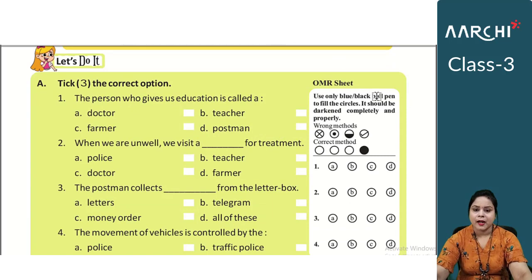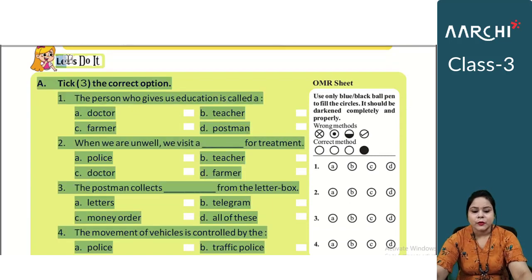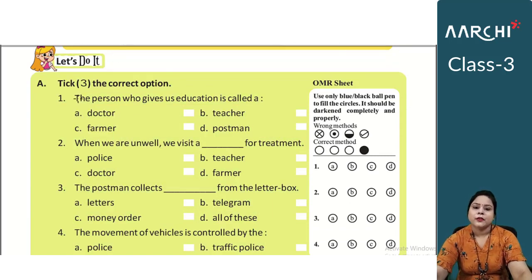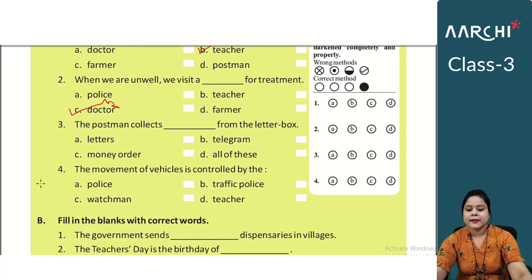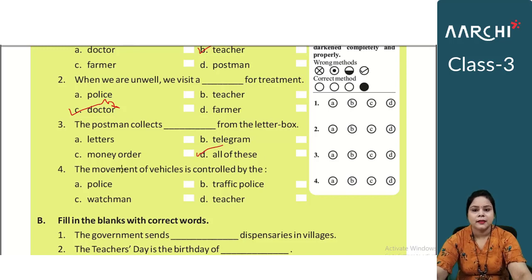Let's do the exercise now. Section A: First, the person who educates us is called a teacher. Second, when we are unwell, we visit a doctor for treatment. Third, the postman collects letters, telegrams, and money orders from the letter box. Fourth, the movement of vehicles is controlled by the traffic police.